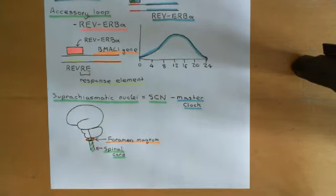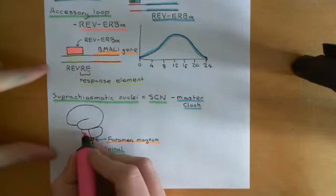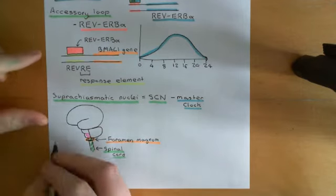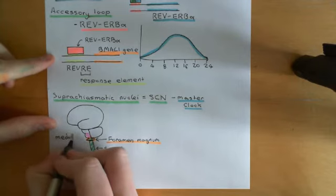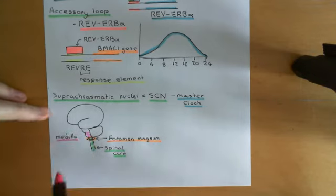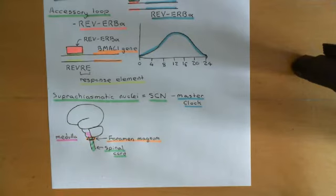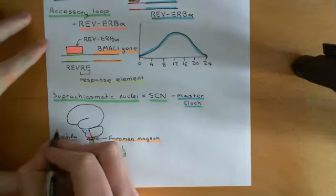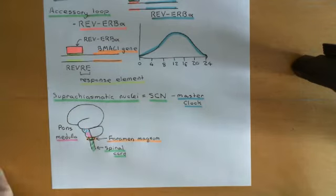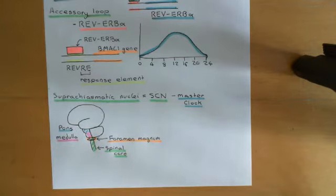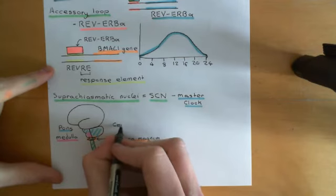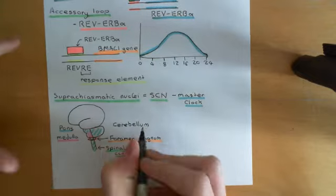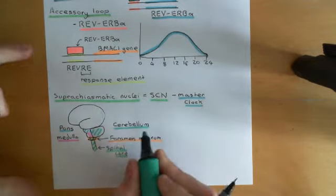Once the spinal cord has passed through the foramen magnum, its continuation is called the brain stem. We can see two portions here: the medulla, coloured in purple, is just like a continuation of the spinal cord. Above the medulla, partially hidden under the cerebral hemispheres, is the pons, coloured in blue. The cerebellum, in turquoise, sits behind the brain stem and literally means 'little brain' — it's extremely important in the motor system.